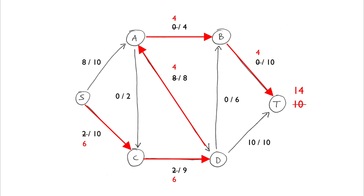Let's look for another path. This looks like a good one. In this case, edge S to A provides our bottleneck capacity with a value of 2. We update our flow.